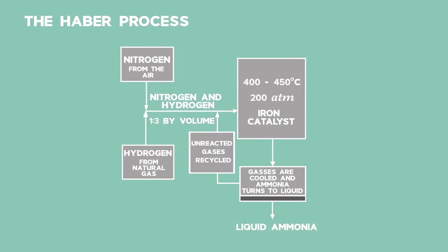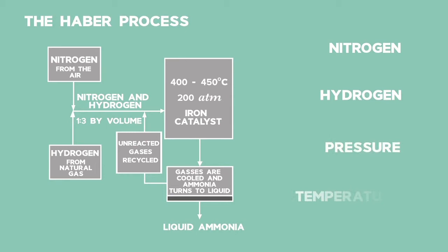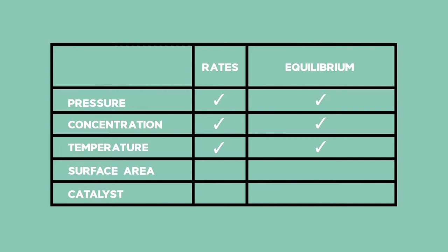The simulation for the Haber process shows how we change the concentration, pressure, and temperature, and how the equilibrium changes. The concentration of nitrogen, hydrogen, even the pressure and temperature affect equilibrium. Pressure, concentration, and temperature are the only factors which will affect equilibrium. Surface area and catalysts also change the rates of reaction, but they increase the rates of both forward and reverse reactions equally.